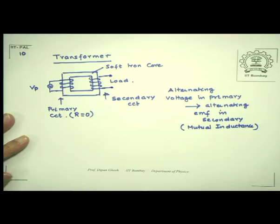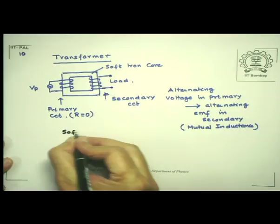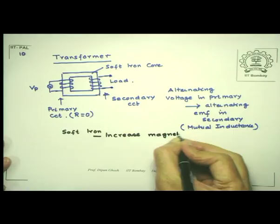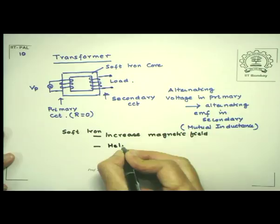The role of the soft iron core is actually twofold. One is it will increase the strength of the magnetic field produced by the primary current — so it increases magnetic field strength. The second thing it does is to help link the flux in the secondary circuit and make sure that it is linked to each turn — it helps with flux linkage.